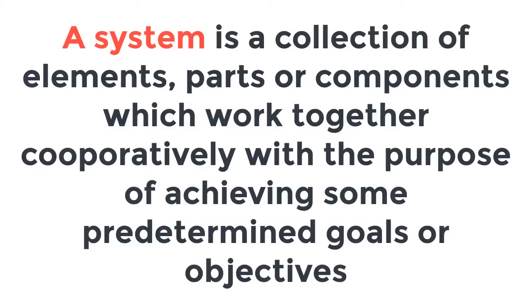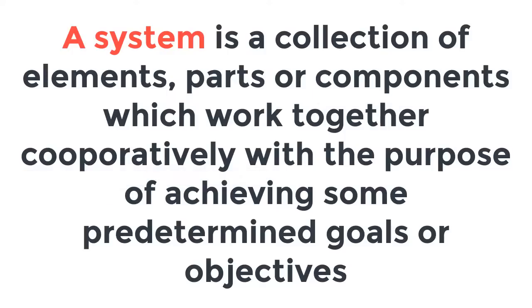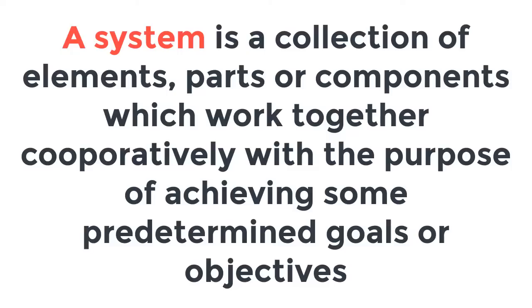What is a system? We could define a system as a collection of elements, parts, or components which work together cooperatively for the purpose of achieving some predetermined goals or objectives.